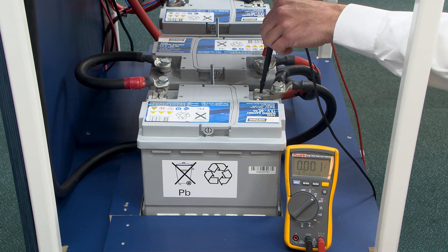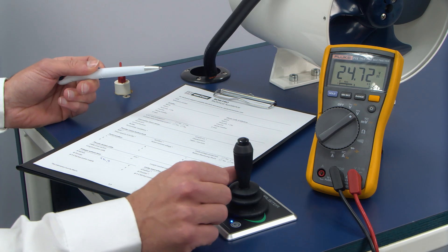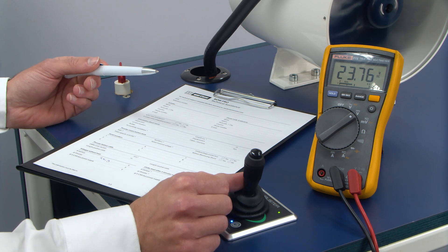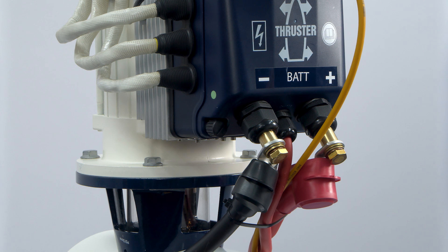First, check the voltage of the batteries when there's no load on them and note this value. Next, turn on the thruster to apply a load to the system and measure the battery voltage again. Record both readings in the log.